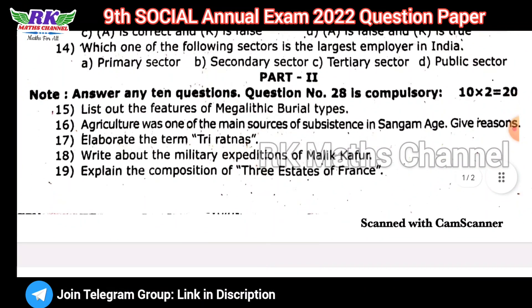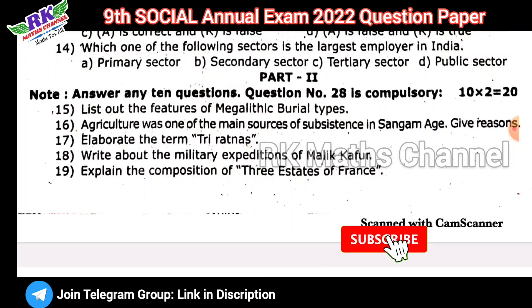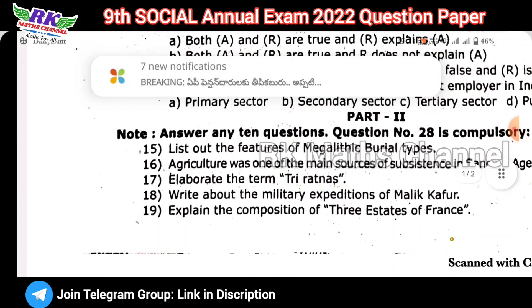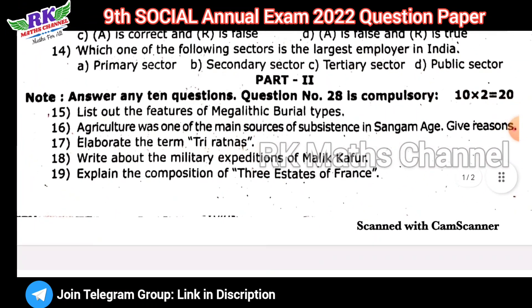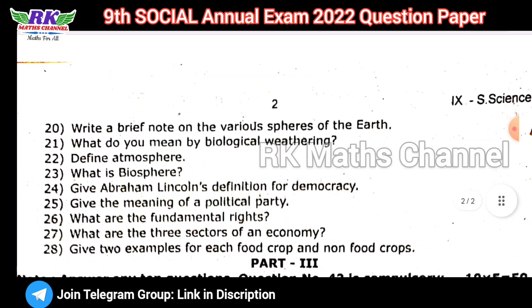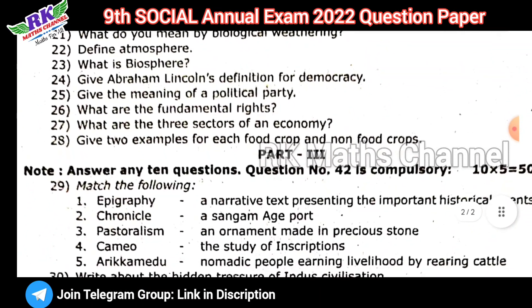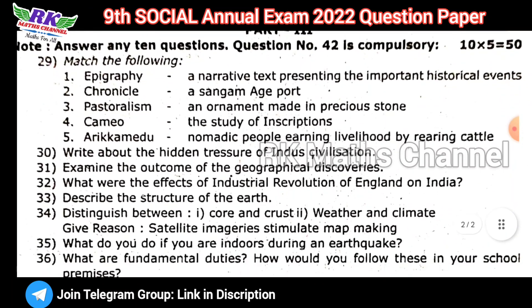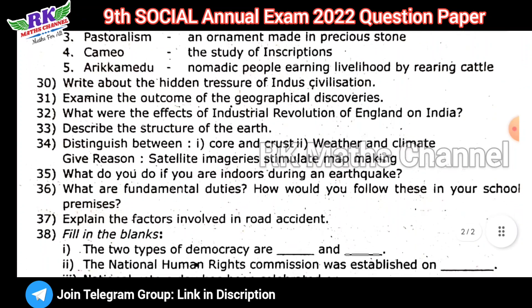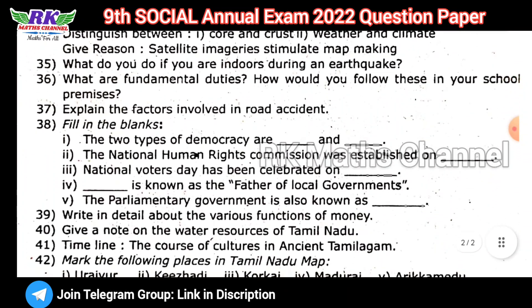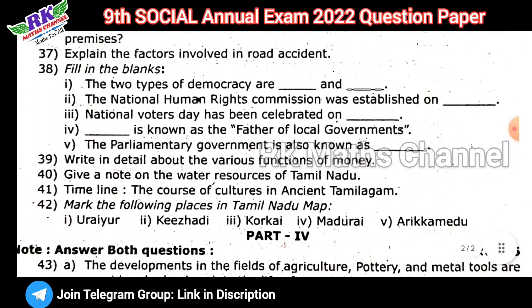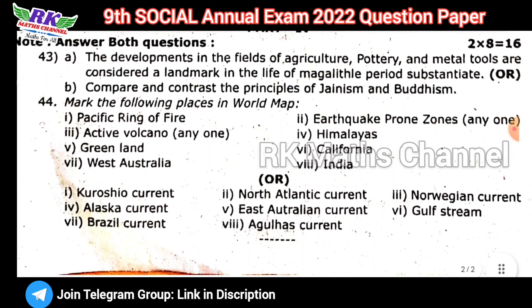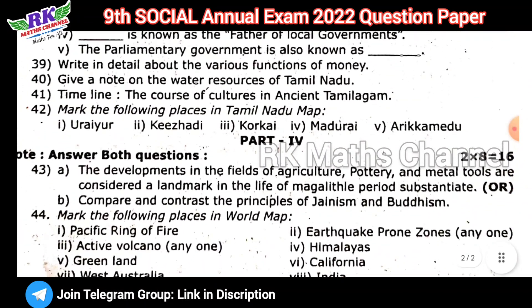Next, part 2. Question number 42 is a compulsory question. Part 4 has 8 marks questions. This is the social science question paper.